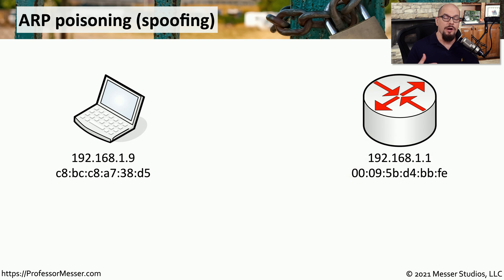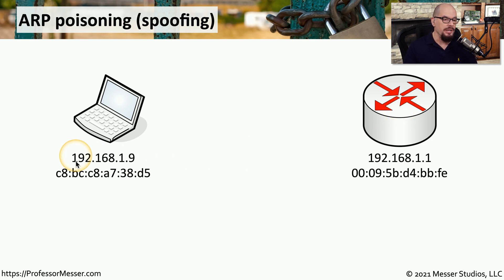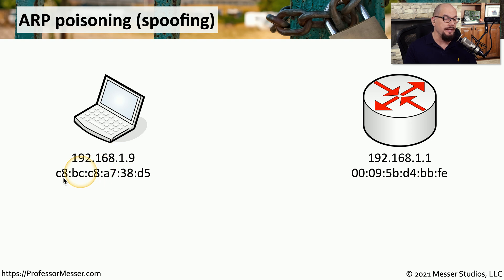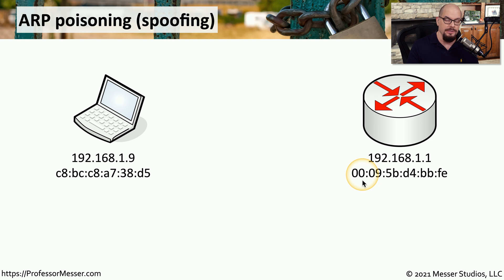Here's the way ARP normally works. You're on a workstation communicating to a router on your local subnet. The workstation is 192.168.1.9 and the router is 192.168.1.1. The MAC addresses of both devices are also listed, and those will be important when we go through the ARP process.